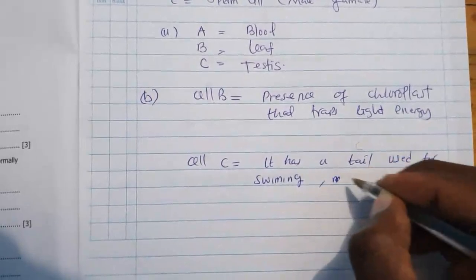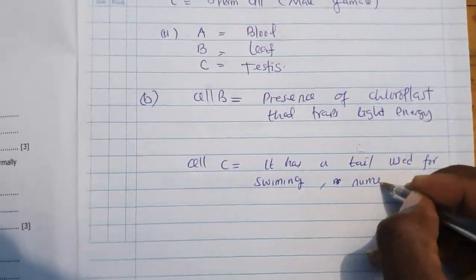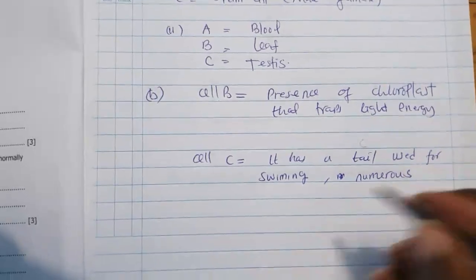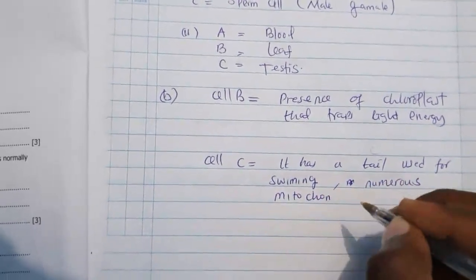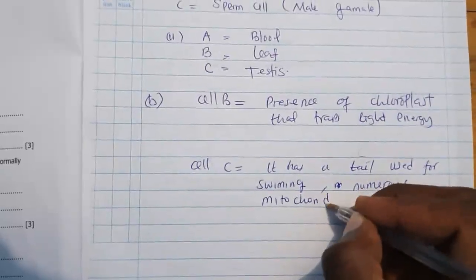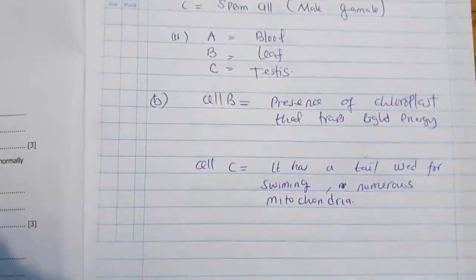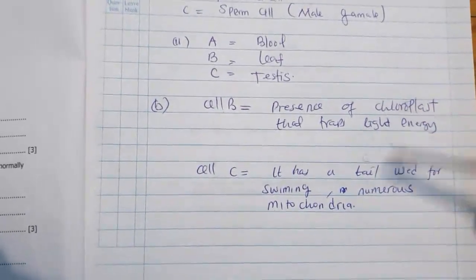So it has got a tail used for swimming. Okay, it also has numerous, you may as, mitochondria.